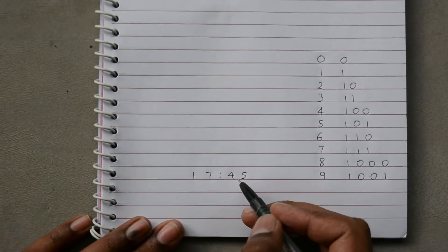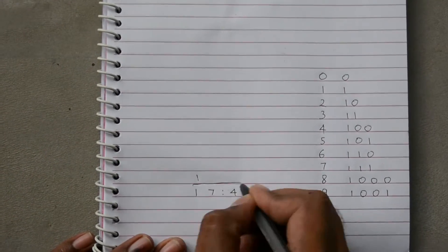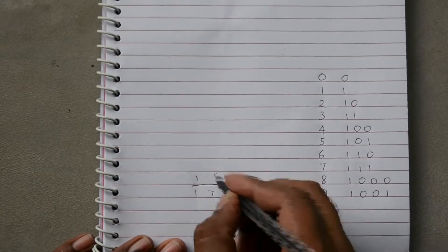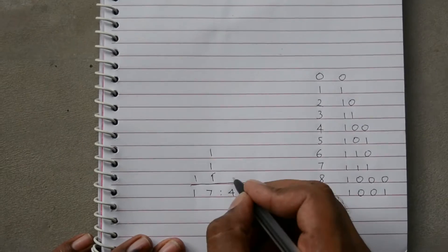And binary equivalent of this would be, for 1 it's 1, for 7 it's 1, 1, 1, for 4 it's 100,